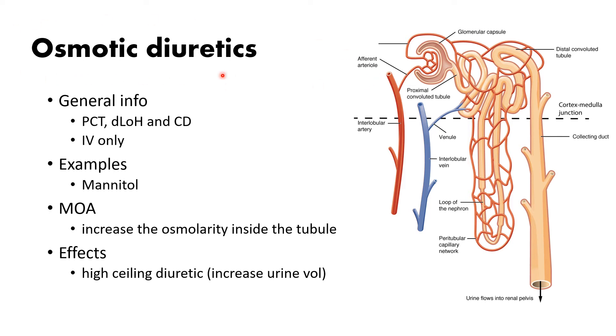The final type of diuretics are the osmotic diuretics. This is really, really simple — I think this is the simplest out of the five.